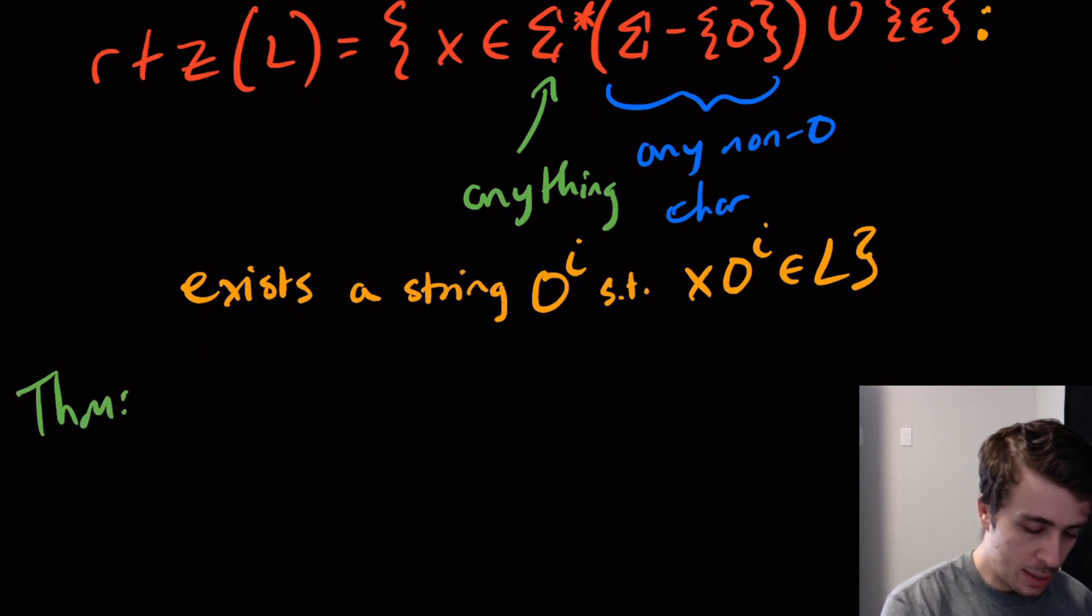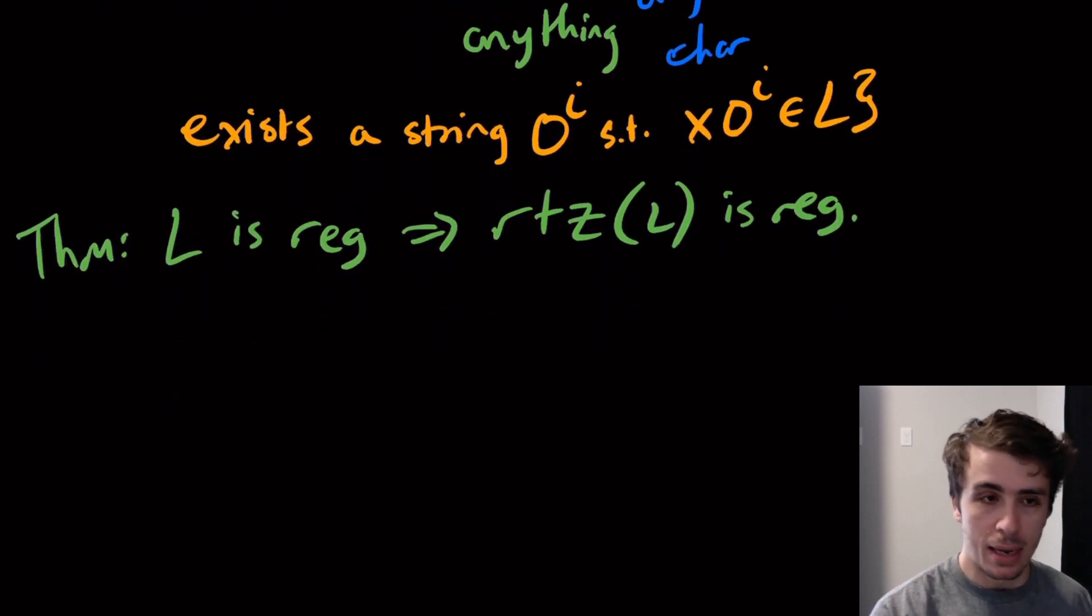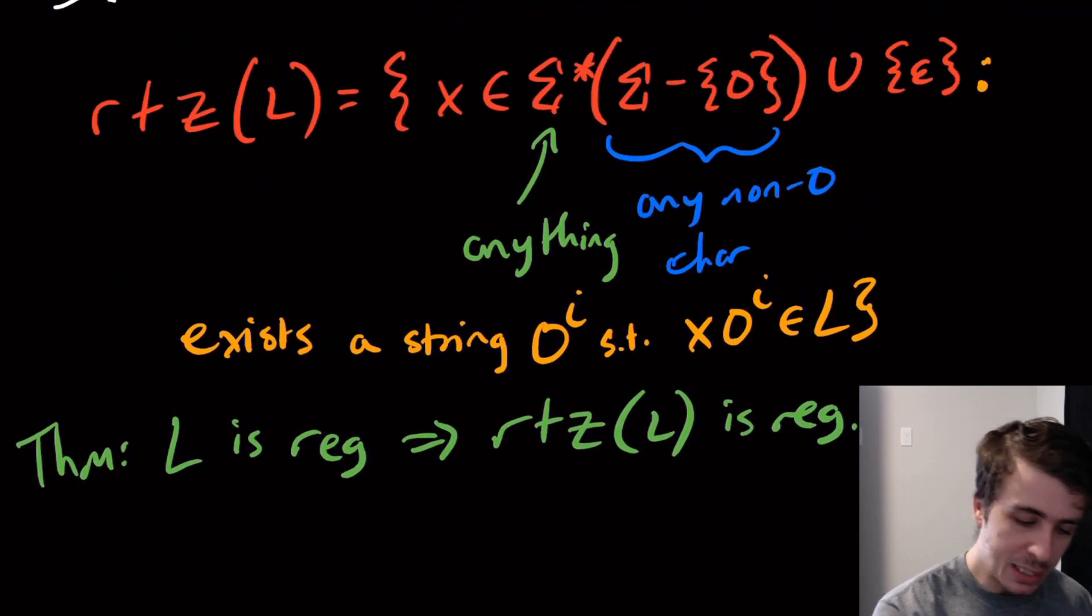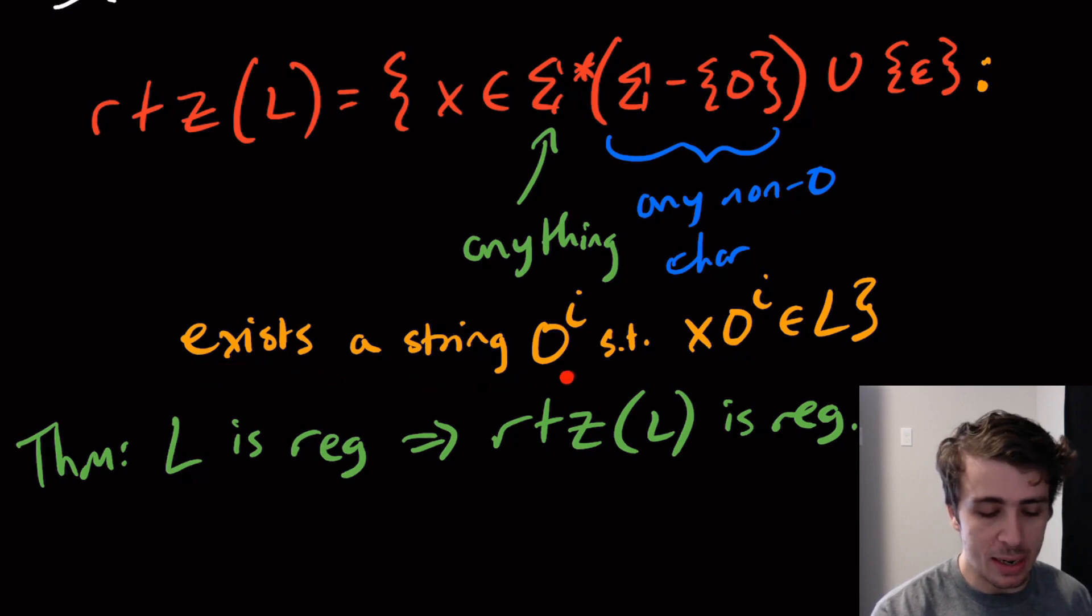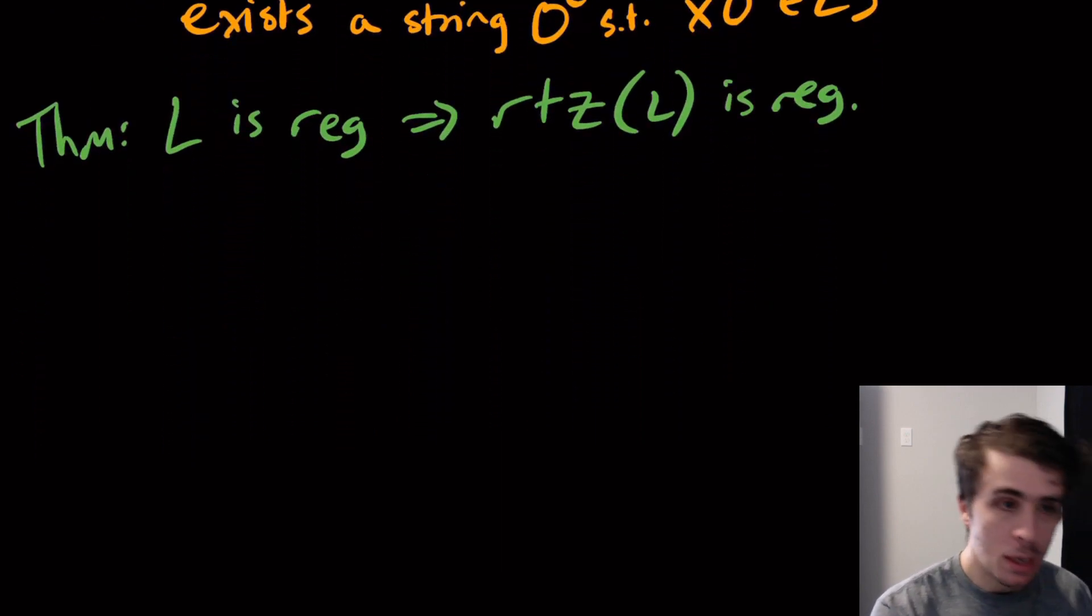A nice result we can show is if L is regular, then we can show that removing the zeros is regular too. Why is this the case? You can kind of see it because the language of exists a string such that the suffix of the string tacked onto that string is in L, that's basically what we just did with the quotient languages.